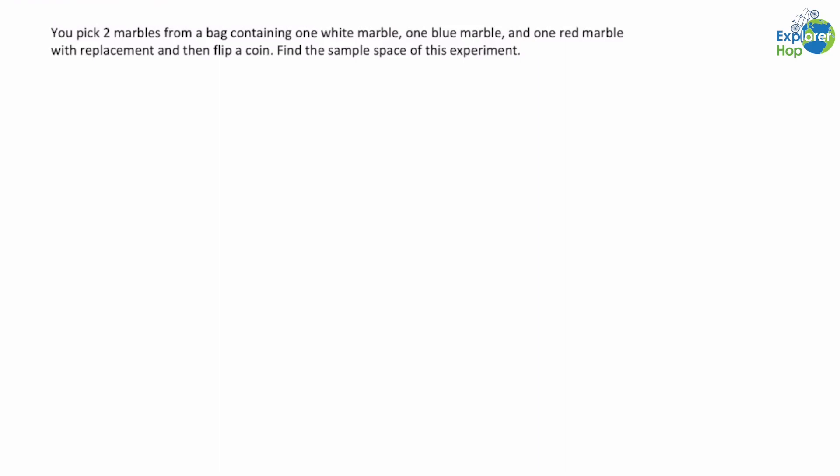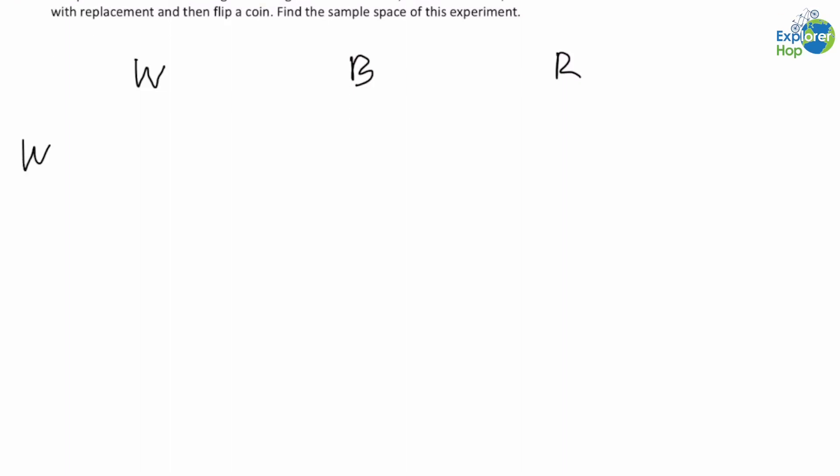Since there are three types of marbles to choose from, we will first start by writing W, B, and R. After we choose a marble, we will choose another marble. Since we are choosing with replacement, this means we still have three types of marbles to choose from. So for each marble we choose, we can choose another marble that can be any of the three colors. We will write W, B, and R again underneath each of the colors that we just wrote.